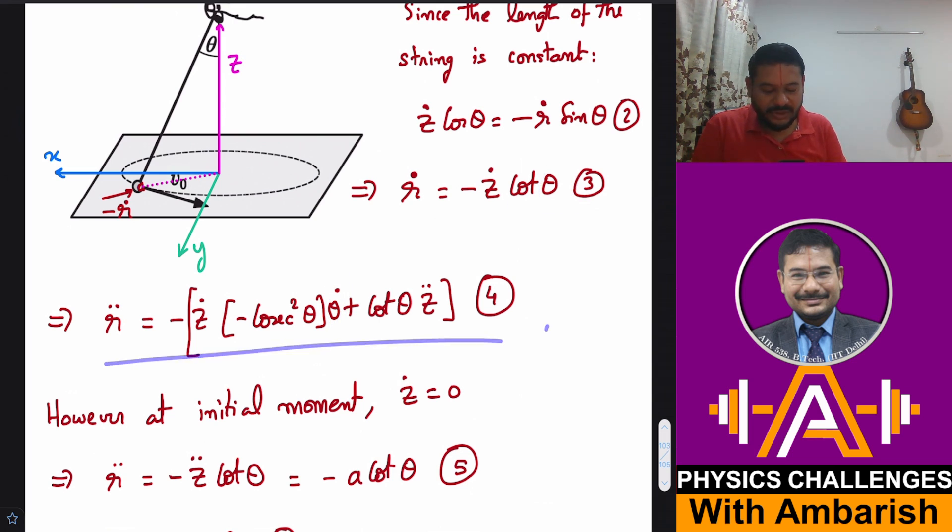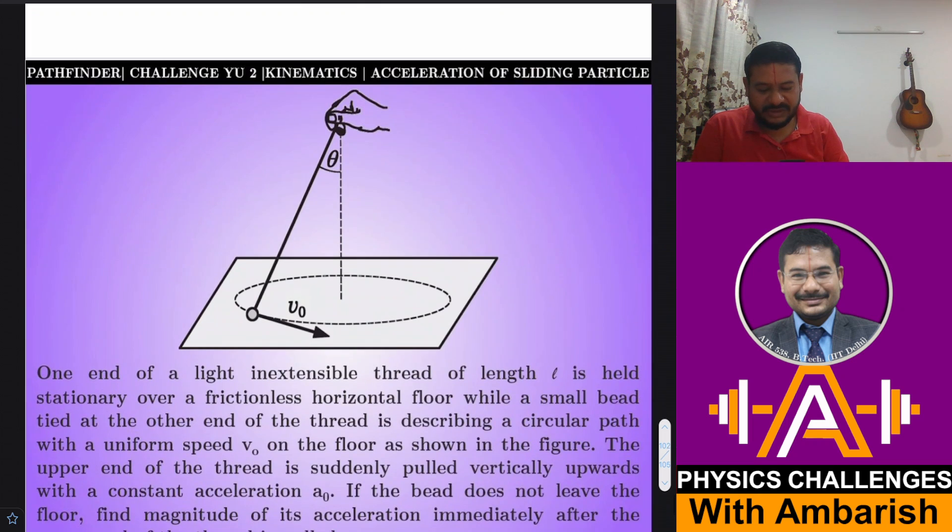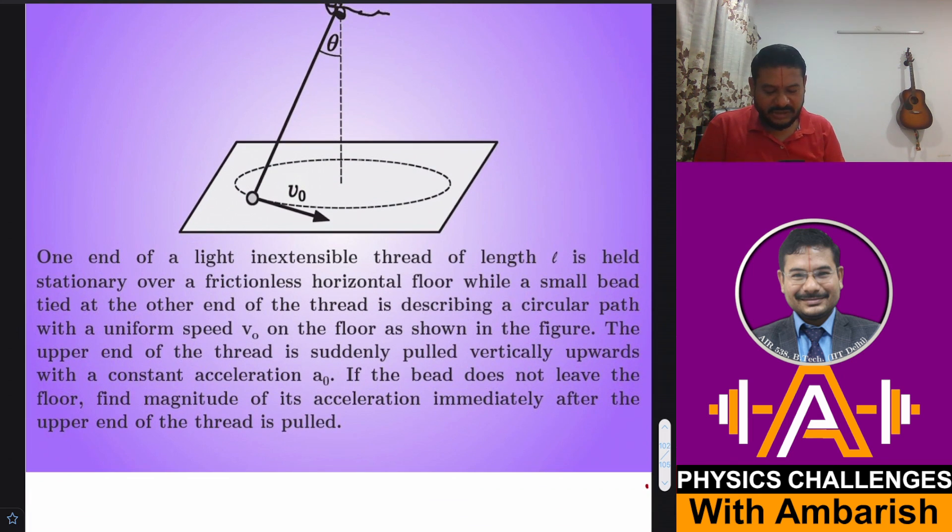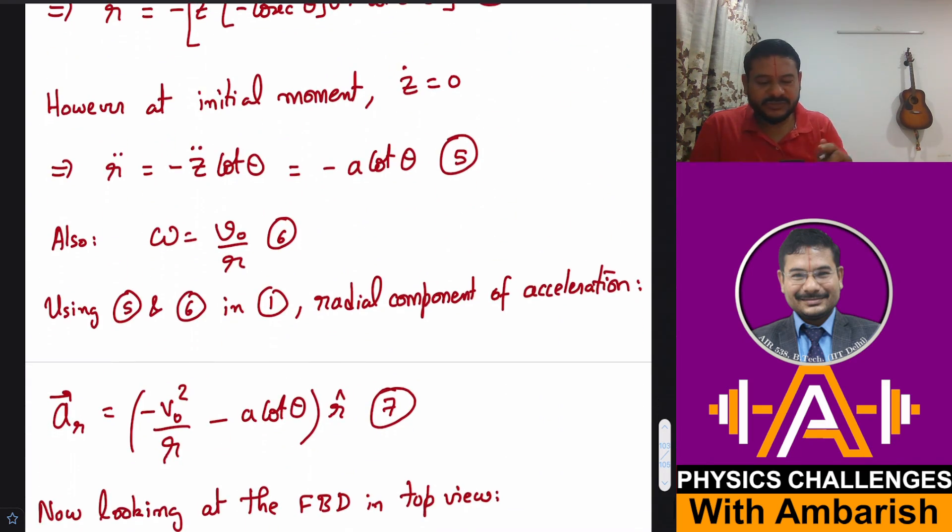So at t = 0, we know that the motion had just started, so ż = 0. So r̈ is nothing but simply -z̈ cot θ, and z̈ is nothing but the given acceleration, that was A₀. The problem itself is given that acceleration is A₀, so let me just write A₀ instead of a. So this is -A₀ cot θ.